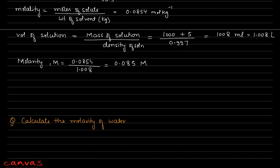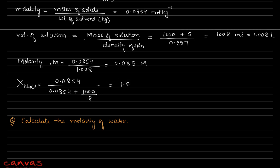For mole fraction of NaCl: moles of NaCl = 0.0854. Moles of water = 1000 / 18 = 55.5. Mole fraction of NaCl = 0.0854 / (0.0854 + 55.5) = 1.53 × 10⁻³. Since it's a binary solution (water and NaCl), mole fraction of water = 1 − 1.53 × 10⁻³.